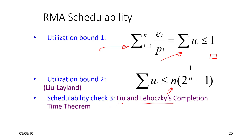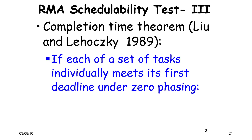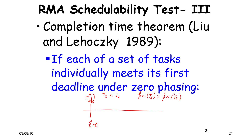Now we look at Liu and Lehocsky's completion time theorem, which gives us a worst case bound that is slightly tighter and more accurate, and can be used more frequently for rate monotonic scheduling. The first theorem states that a set of tasks sees their worst case if all of them are issued at t = 0. For an informal proof, consider two tasks t1 and t2 where the period of t1 is less than the period of t2, meaning the priority of t1 is greater than the priority of t2.